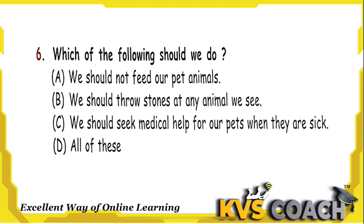Question 6: Which of the following should we do? Option A — we should not feed our pets — is wrong; we should feed them. Option B — throw stones at animals — is also wrong. Option C — seek medical help for our pets when they are sick — is correct. Option D — all of these — is wrong because A and B are incorrect. Option C is the right answer.